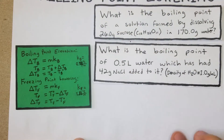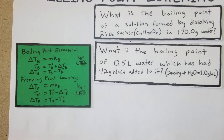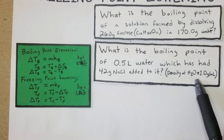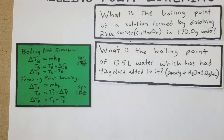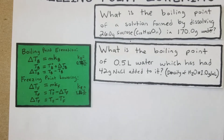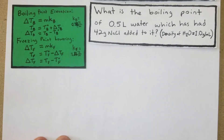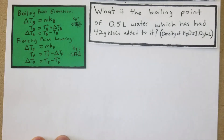Next problem: what is the boiling point of 0.5 liters of water which has had 42 grams of NaCl added to it? We're given the density of water as well. We're looking for the boiling point of 0.5 liters of water with 42 grams of salt in it.